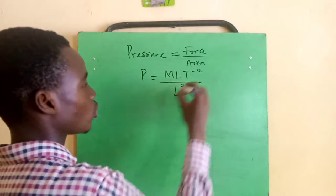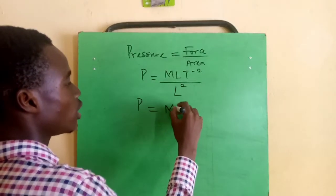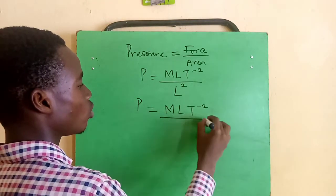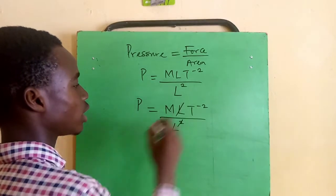So it becomes pressure equal to MLT raised to power minus two over L squared. One of this L will cancel this L.